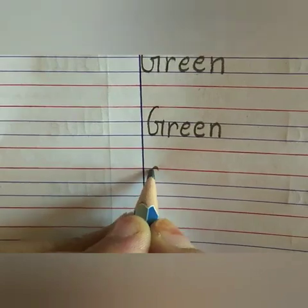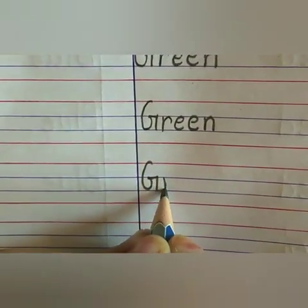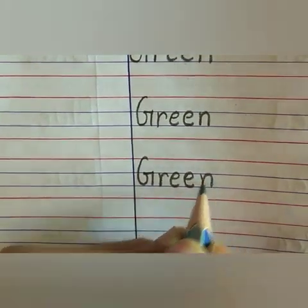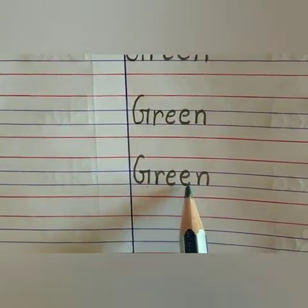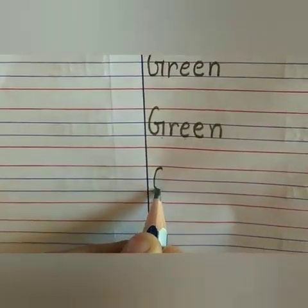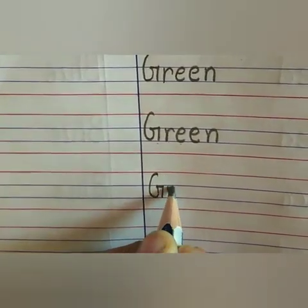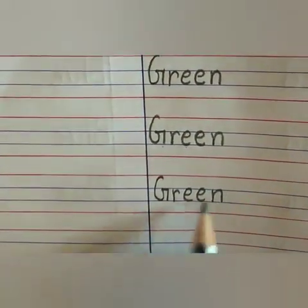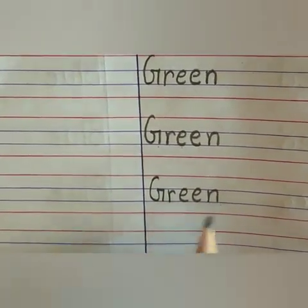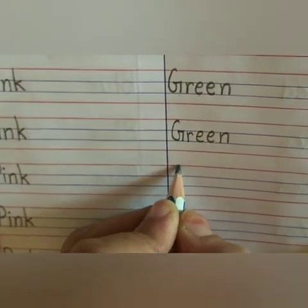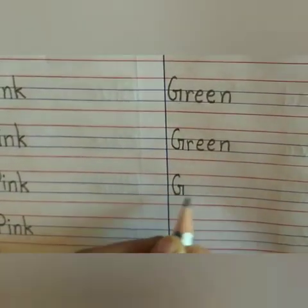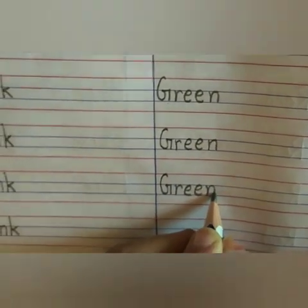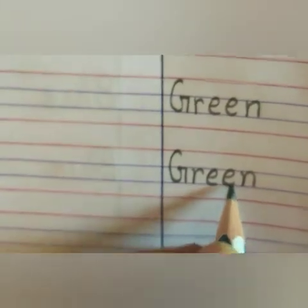Now we will write. Capital G, small r, small e, small e, small n — G, R, double e, N — Green. Again we will write: capital G, small r, small e, small e, small n — G, R, double e, N — Green. Students, speak and write. Capital G, small r, small e, small e, small n — G, R, double e, N — Green.